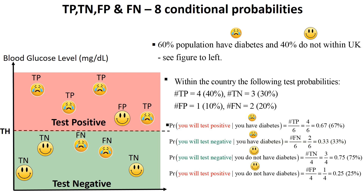Now we do simple conditional probability. The probability you will test positive, conditioned on having diabetes — that vertical bar means 'conditioned on.' The number of true positives is four, over the total number with diabetes which is six. There are six crying faces, and four of those land in the pink (positive) area. So four over six gives a 67% chance of testing positive given that you have diabetes.